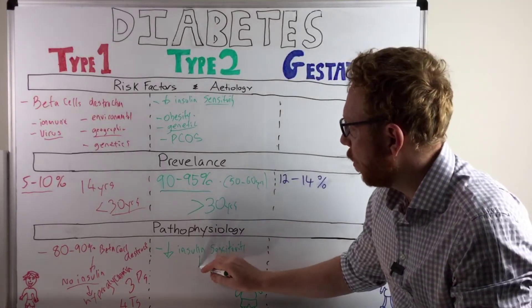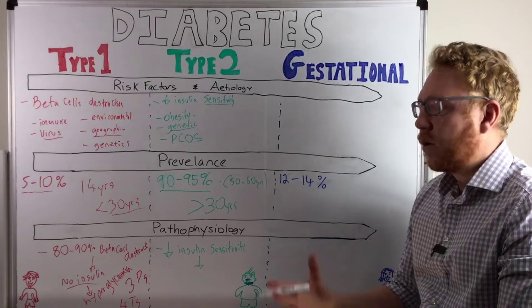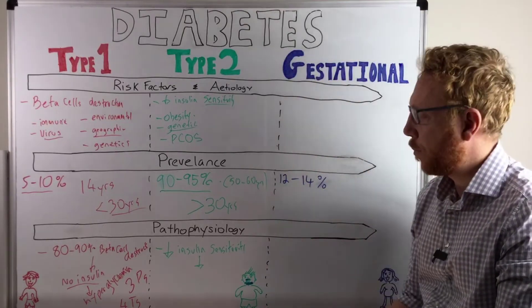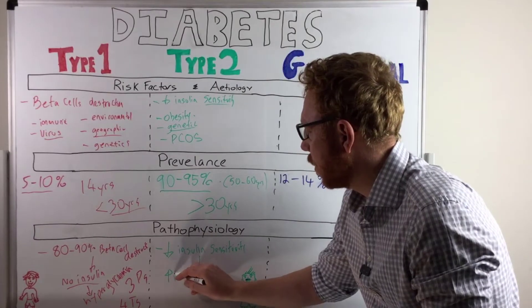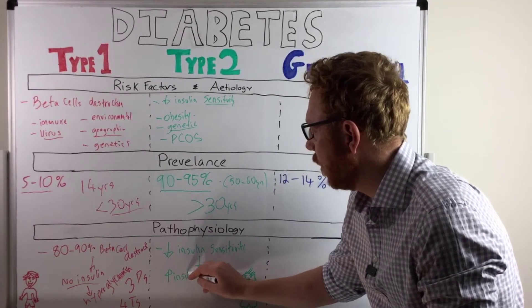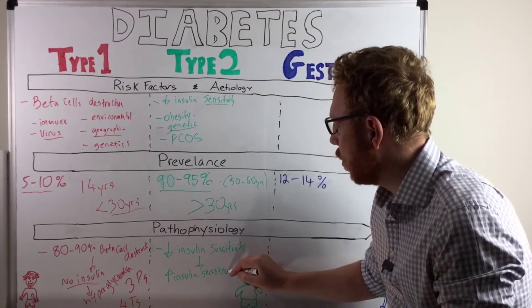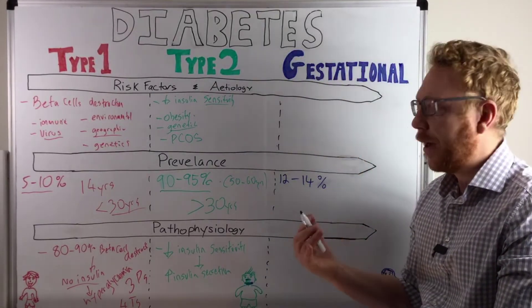Now as a result, what happens is because you're going to have a higher blood sugar now, the pancreas is trying to respond by increasing insulin secretion. So increase in insulin secretion. And this is called hyperinsulinemia.